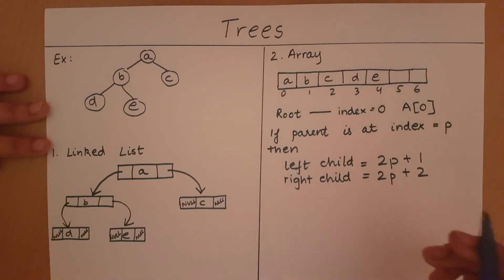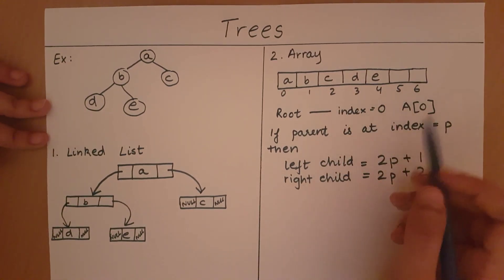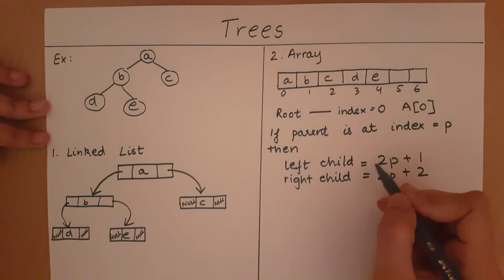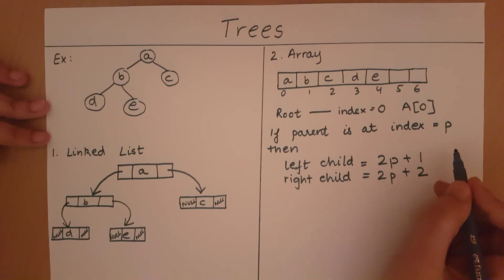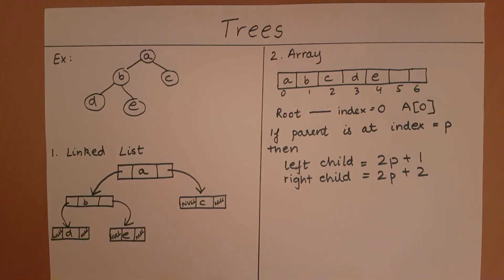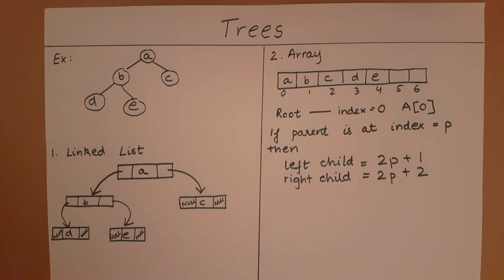For C, which does not have any children, C is at index 2. The left child would be found at 2×2 + 1 = 5, which is a null value — correct, because C does not have a left or right child. So this is the formula used to find the children of a parent node at index p.